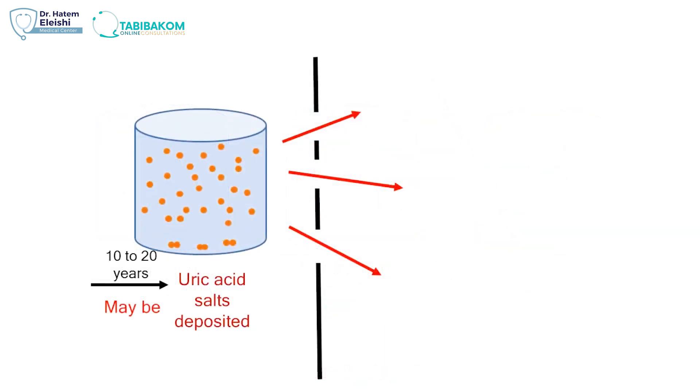If they deposit in the tissues, where do they deposit? They love three types of tissues. They love the joints. They love the joints in general, but mostly they love the feet joints. The big toe, the mid-tarsal, which are the joints of the middle of the foot, the ankle. They love those joints specially.